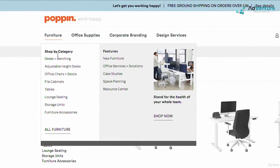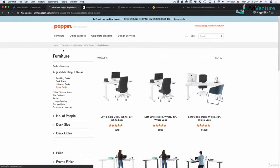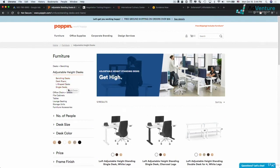I could potentially turn any of these subcategories into campaigns as well. So I might have a campaign for desks and benching. Or in the previous example, I might have a campaign for adjustable height desks, and then have an ad group for benching desks, desk risers, L-shaped desks, and single desks.